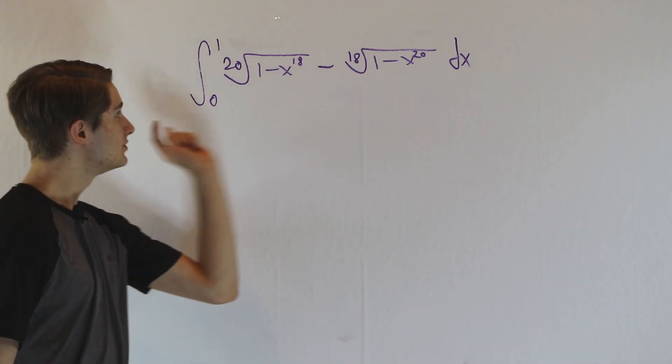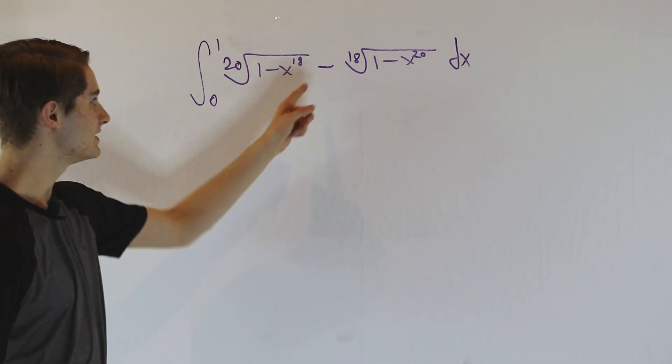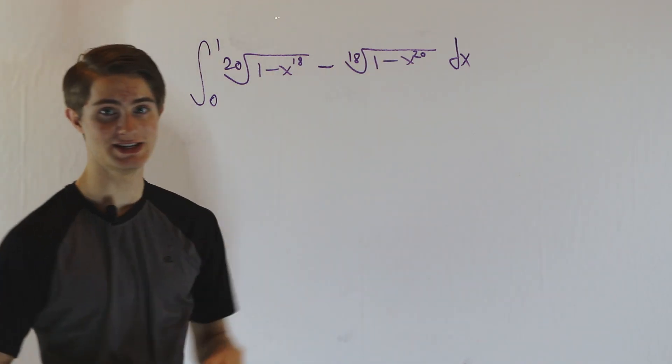We are going to take the integral from 0 to 1 of the 20th root of 1 minus x to the 18th, minus the 18th root of 1 minus x to the 20th, dx.